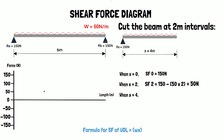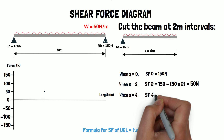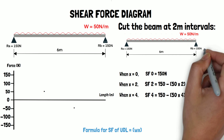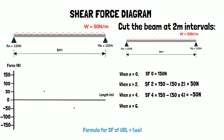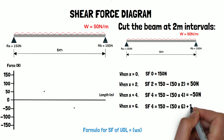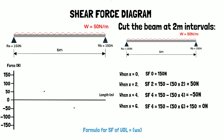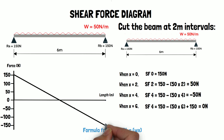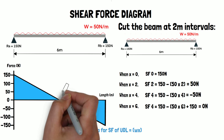When x equals 4, the shear force becomes 150 minus 50 times 4, which equals minus 50 newtons. When x equals 6, we include the 150 newton reaction force RB in the positive direction, so the shear force is 150 minus 50 times 6 plus 150, which equals zero newtons. By connecting the dots we get the finished shear force diagram, which identifies the point of maximum shear stress where the line crosses the neutral axis.